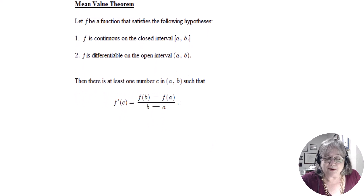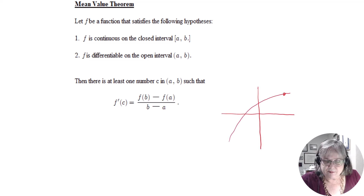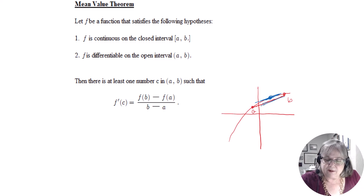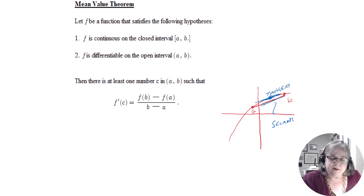What it's saying is: let's say we have some sort of a curve. This is a and this is b, and they're not at the same height. I could find a straight-line slope between a and b. And what this says is that there is some point on the curve — you can kind of eyeball it — where the slope of the tangent is parallel to the slope of the secant. So this is the secant line between a and b, and this is the tangent.